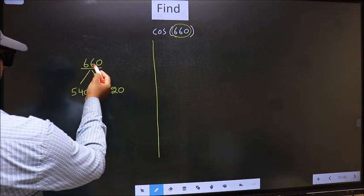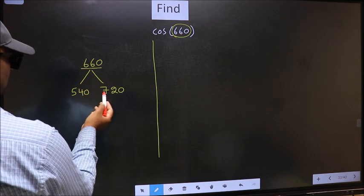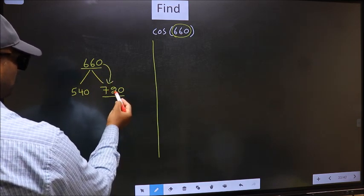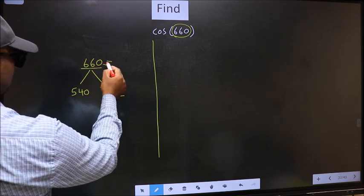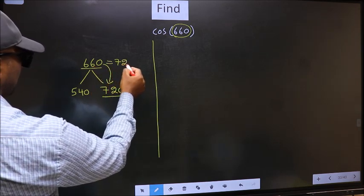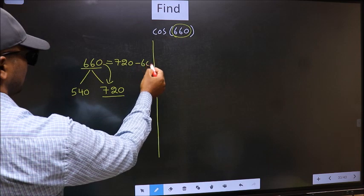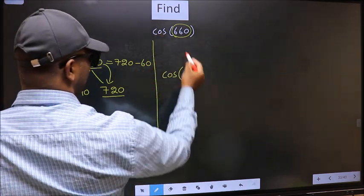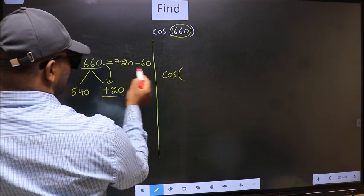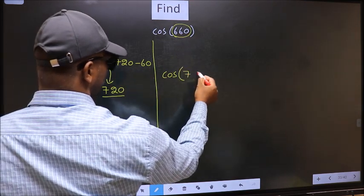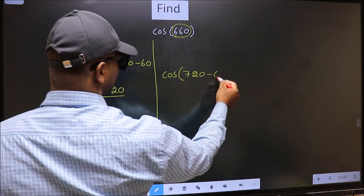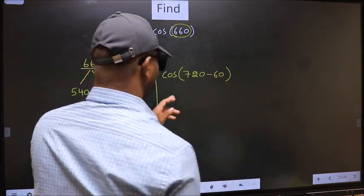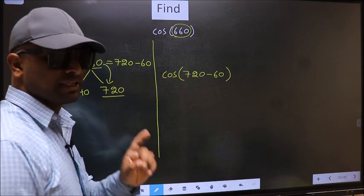Next, now 660 is close to which number? This is close to 720. So in place of this, now we should write 720 minus 60. So this will become cos, in place of this we write 720 minus 60. This is your step 1.